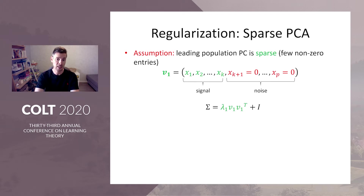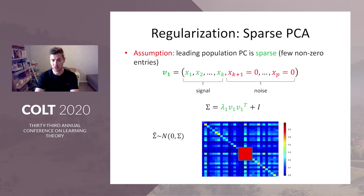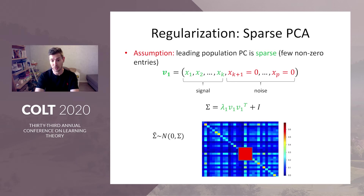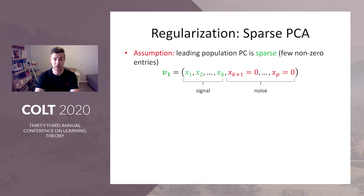It's instructive to think of the following population covariance matrix. You have a rank-one matrix corresponding to V1 plus white noise. One such example of a sample covariance matrix has everything almost zero, corresponding to the white noise part, with a red square corresponding to the signal. Our task is to find this red square.